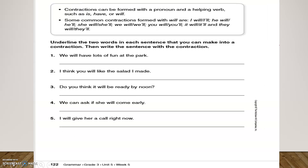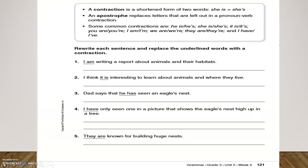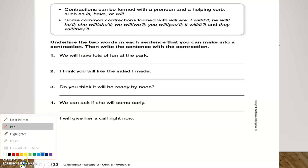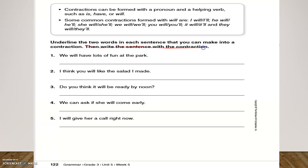Open page 122. It says: underline the two words in each sentence that you can make into a contraction. So it's like the previous page, but nothing is underlined for you — you need to figure out what can be written as a contraction. For example: 'We will have lots of fun at the park' — 'we will' can be written as a contraction. Pause until you finish this page, then let's move to page 123.